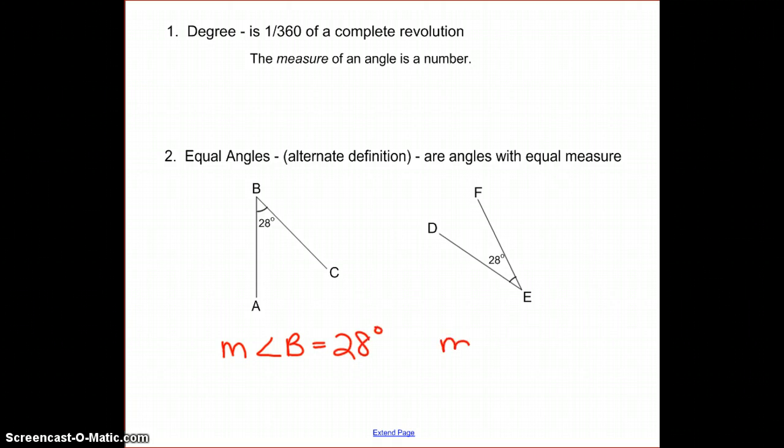Since these angles are equal, we could say the measure of B is equal to the measure of angle E, or we could say that angle B is congruent to angle E.